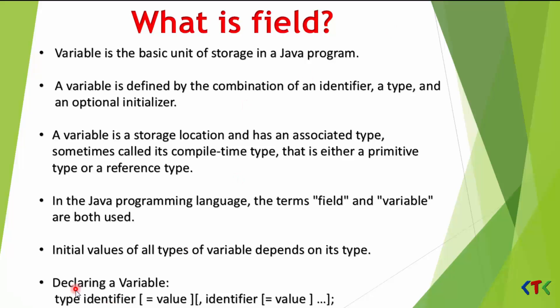This is the way we declare a variable. Type is nothing but the data type of that variable; identifier is the name; and it is optional whether you want to initialize the variable or not.